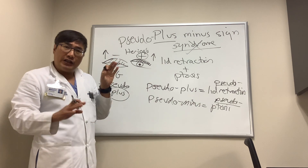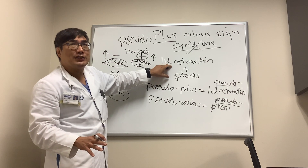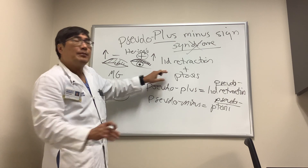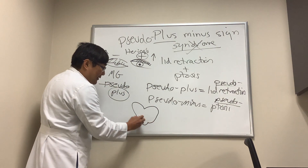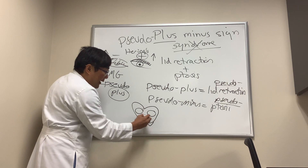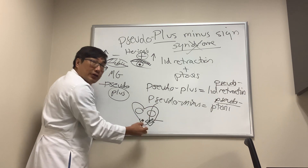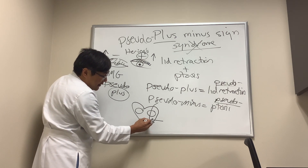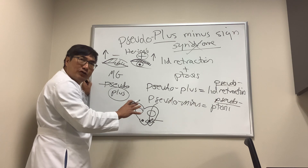However — and you need to watch the other video for this — sometimes it is true lid retraction and true ptosis because you have a plus-minus sign from the plus-minus syndrome. That's because the lesion is in the dorsal midbrain, affecting the supranuclear input to the levator and causing lid retraction.